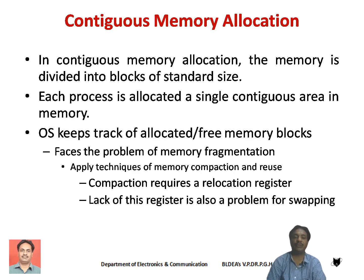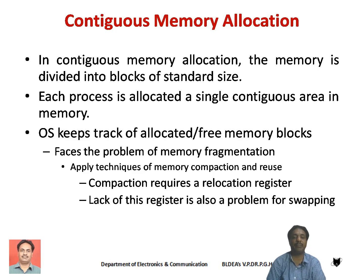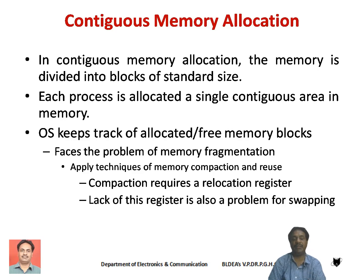Remember, the contiguous memory allocation scheme will also suffer from internal fragmentation. Many times it happens that the memory block allocated to a process may not be completely utilized, leading to internal memory fragmentation. To overcome this, the operating system can apply a method called memory compaction, as discussed in the last class.